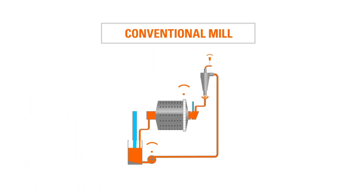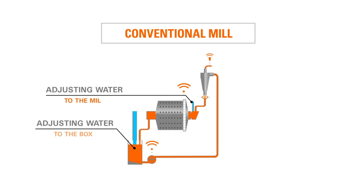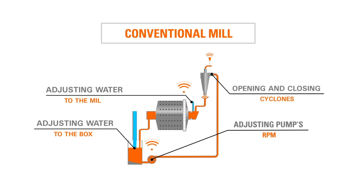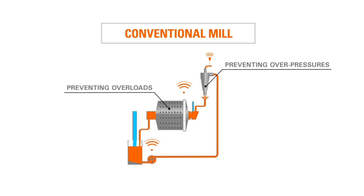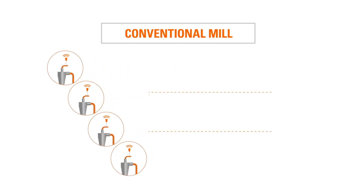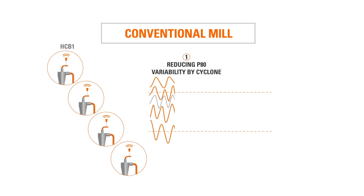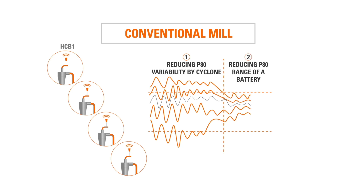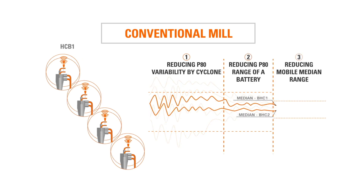Conventional mill. We guarantee the quality of the product of hydrocyclone batteries by adjusting water addition to the mill and box, the pump RPM speed, and the cyclones in operation, preventing undesired events such as overloads in mills, overpressure in the batteries, and overflows in the boxes. Achieving reduced P80 variability of each hydrocyclone, reduced P80 movement inside a battery, and stretched P80 battery median rate.